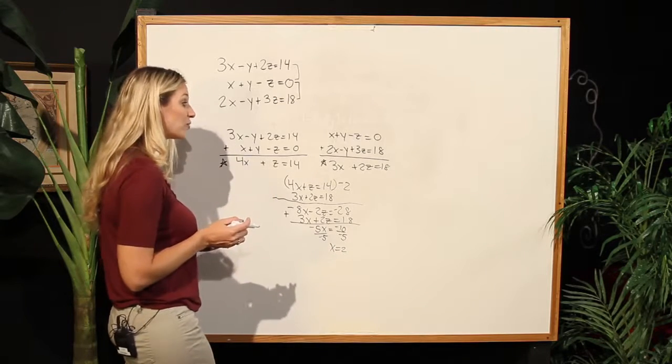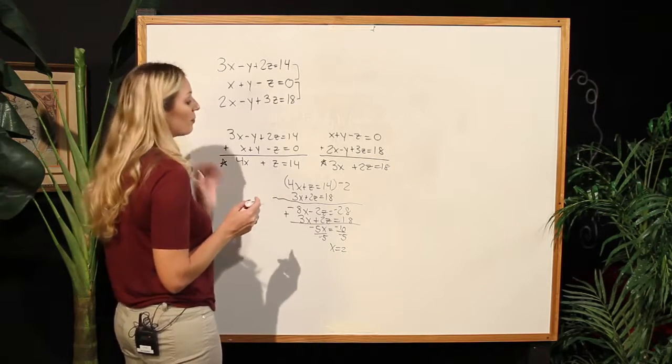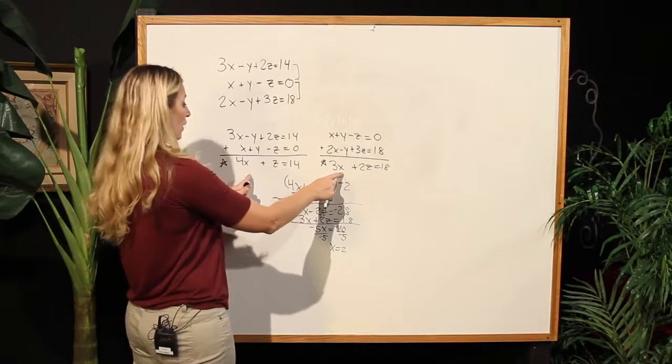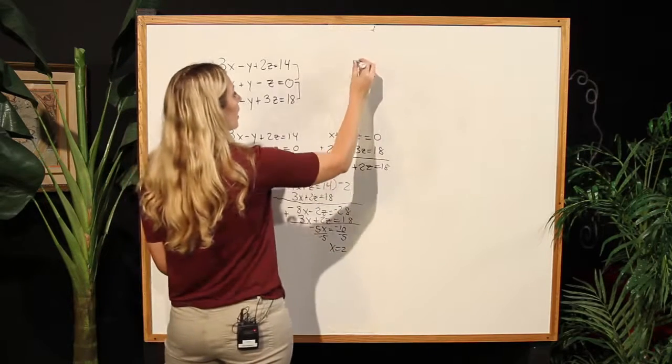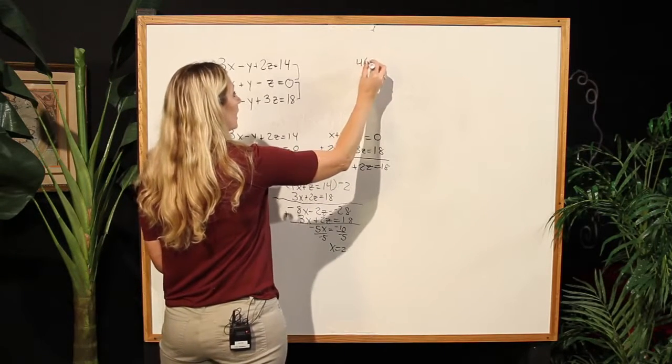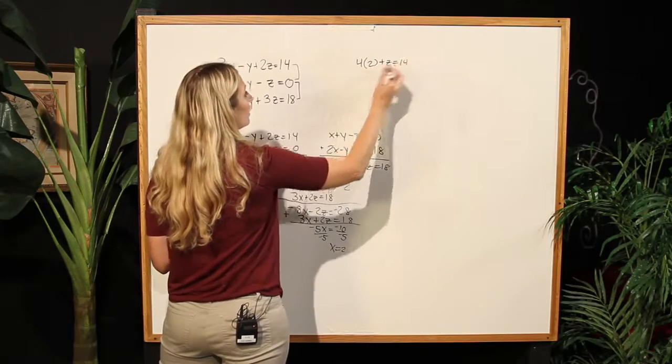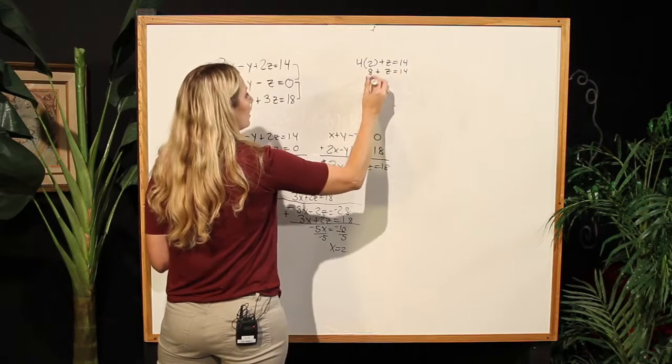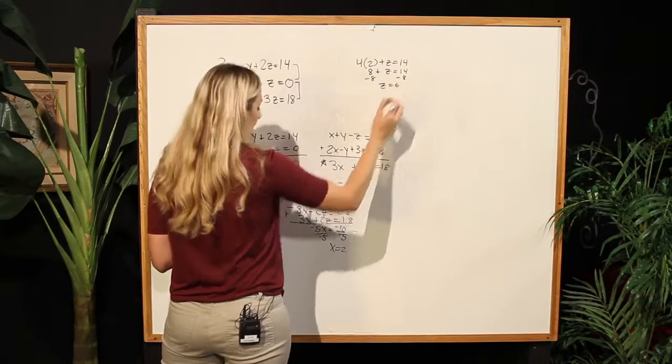I have my x, but I am not done. Now I need to substitute back in to find my other variables. I'll go back to one of my intermediate equations here in order to find z. I will have 4, and now we know that x is 2, plus z is equal to 14. Therefore, 8 plus z is 14, and subtracting, I get that z is equal to 6.